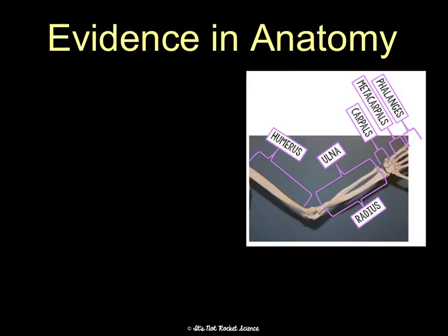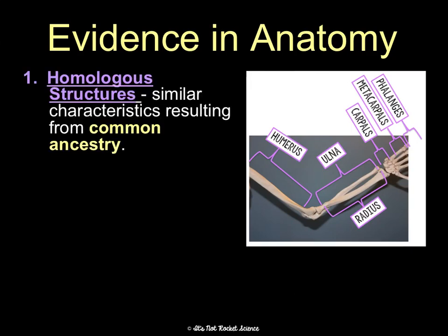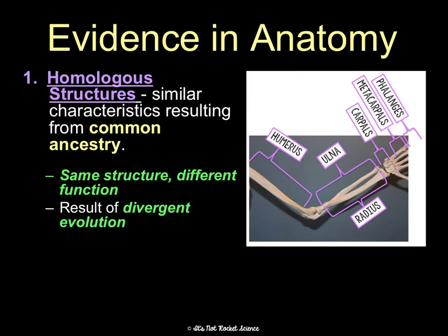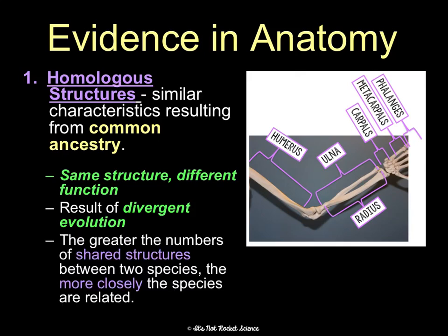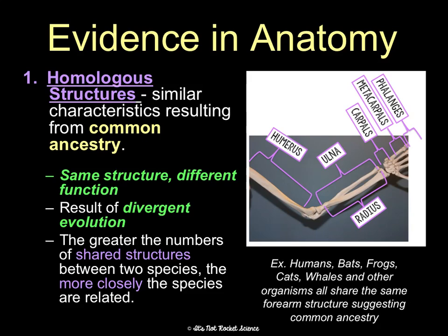The anatomical evidence is pretty interesting. We're going to talk through three different types of structures that provide evidence for evolution. First are homologous structures, which have similar characteristics resulting from common ancestry. Organisms that share homologous structures have the same kind of internal structure or layout, but different functions — due to divergent evolution and living in different environments. The greater the number of shared structures between two species, the more closely related the species are.